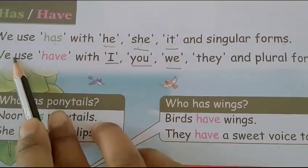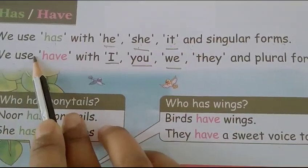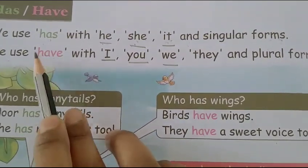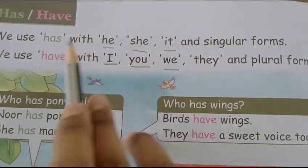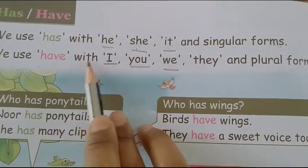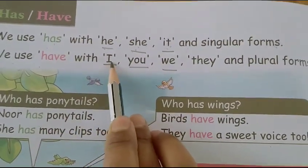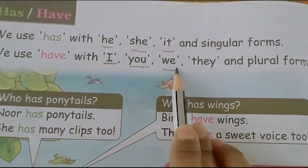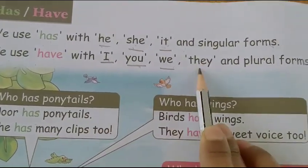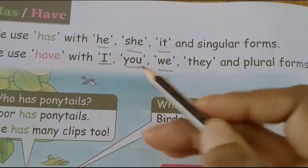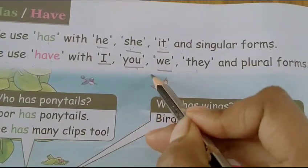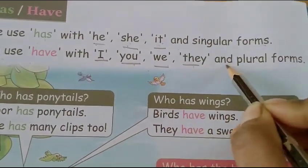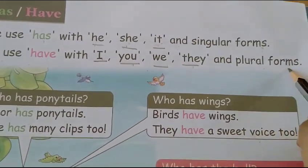Here we use have. H, A, V, E — have. With I, you, we, they. I, you, we, they and plural forms.